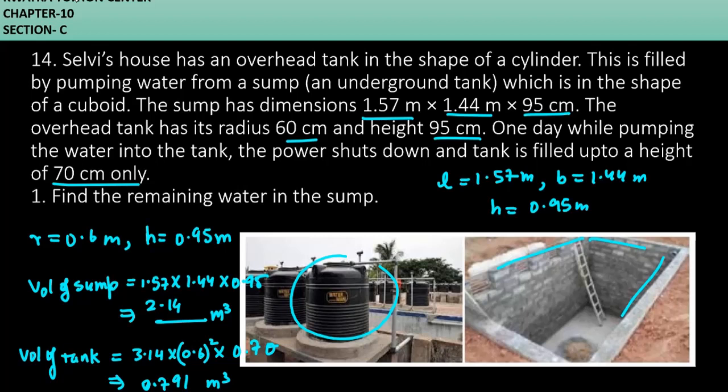Now you can subtract these two values. So 2.14 minus 0.791, you will get the approximate value as 1.3 meter cube. This is the remaining water in the sump. Now moving to the second part of it.